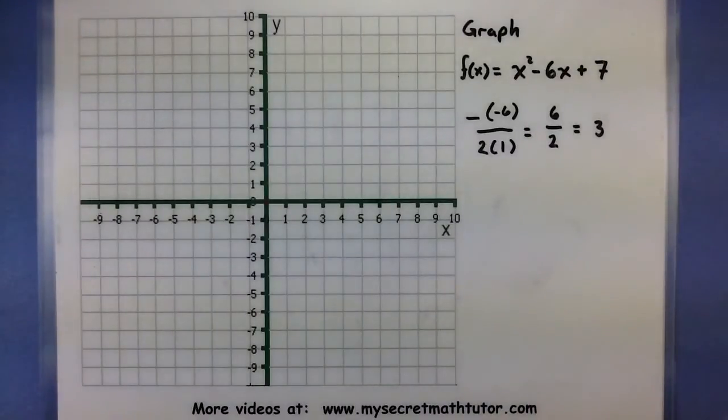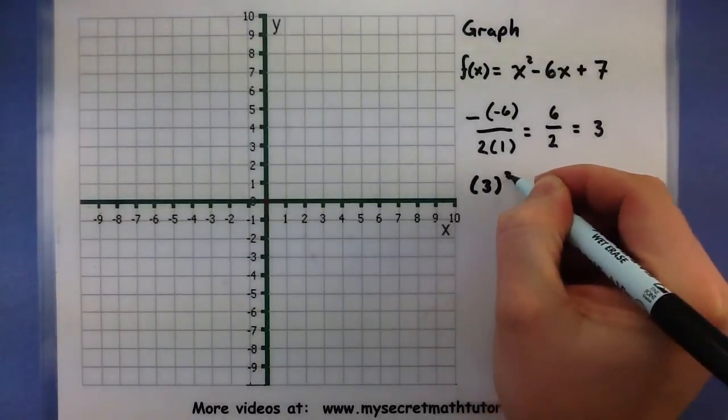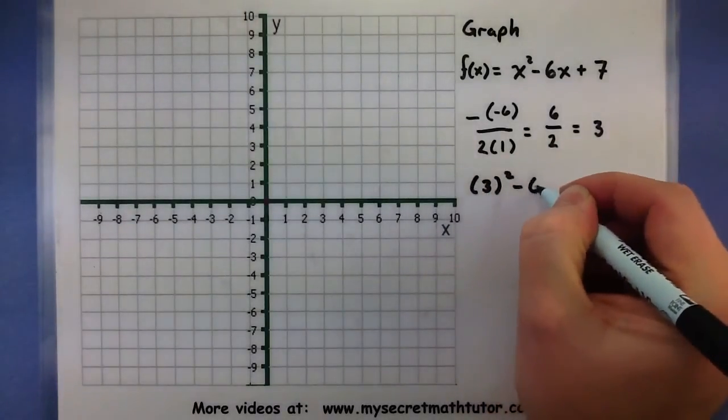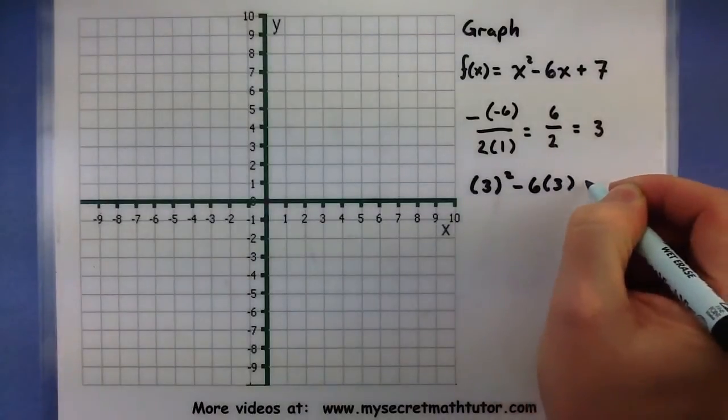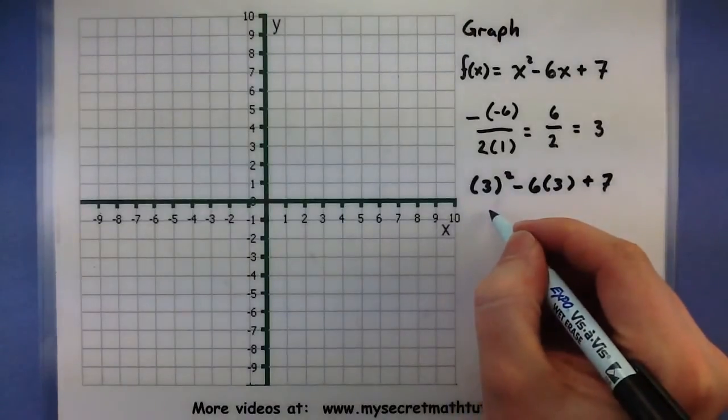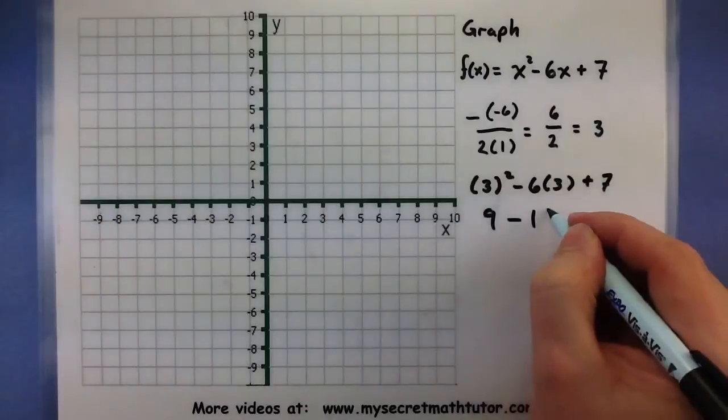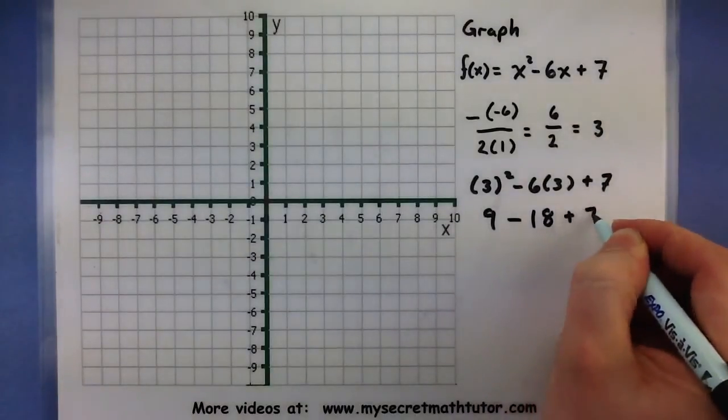If we want the y-coordinate, let's go ahead and borrow that 3 and plug it into the function. So 3 squared minus 6 times 3 plus 7. So simplifying a 3 squared, that is a 9 minus 18 plus 7.